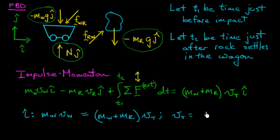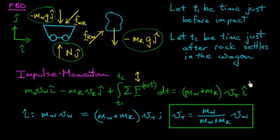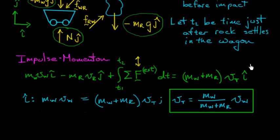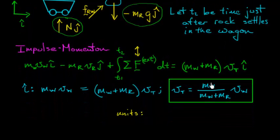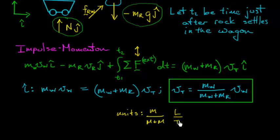Now it's super easy to solve for VT. And here's what I get. Before being completely satisfied with my answer, I should check some units. We have a mass divided by a mass plus a mass, multiplied by VW. A mass plus a mass is a mass that cancels with the mass on top.